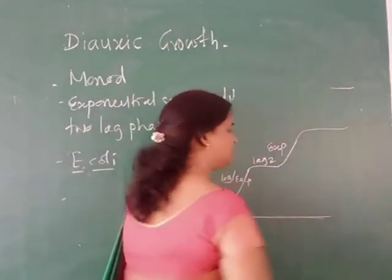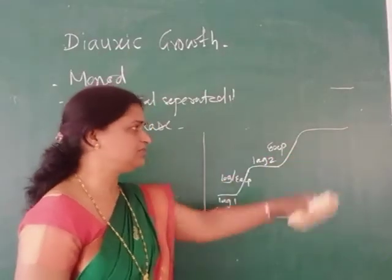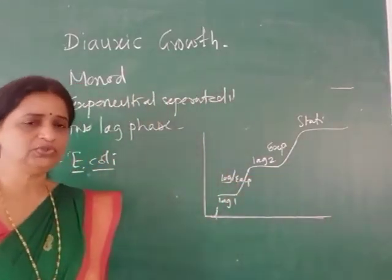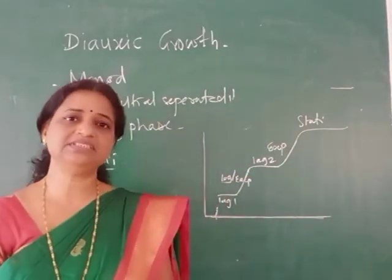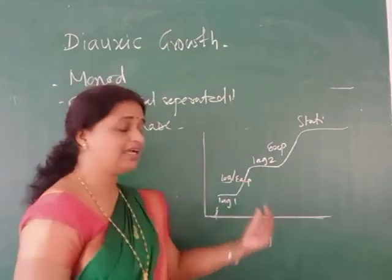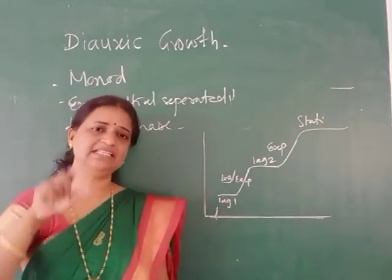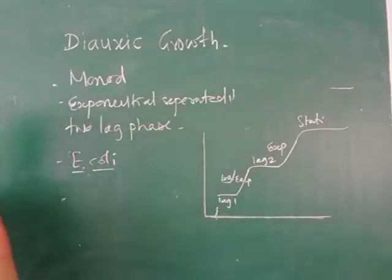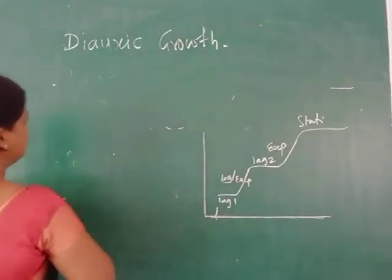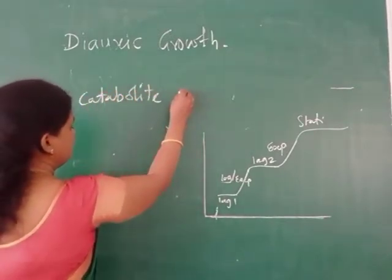After preparation for lactose utilization, the organism shows the second exponential phase, and then after complete utilization of both sugars, it enters the stationary phase. This is the growth pattern when two sugars are present. The reason the organism selects glucose first and then lactose is explained by a mechanism involving catabolite repression.